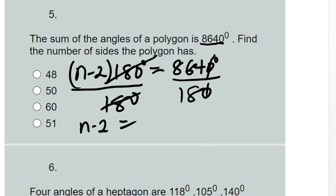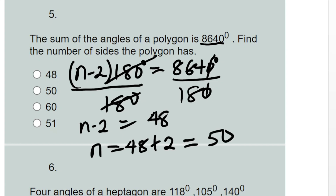Dividing 864 by 18 gives us 48. So n minus 2 equals 48, which means n equals 48 plus 2, giving us 50. The number of sides of that polygon is 50 sides — we don't know its name.